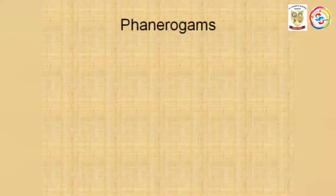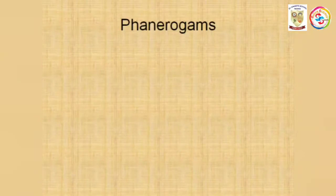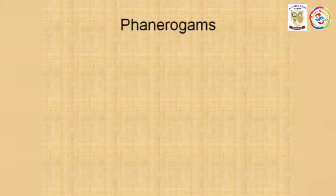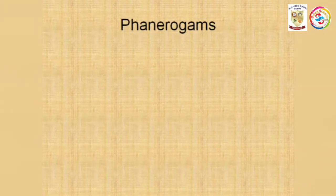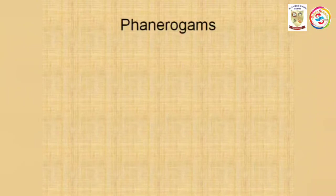Good morning everyone. In this lecture, we will study the classification of plants, specifically phanerogams — flowering plants. The criteria for classification of plants include organs like roots, stem, leaves, and parts of conducting tissues. Basically, plants are classified into cryptogams (non-flowering plants) and phanerogams (flowering plants). Cryptogams are further divided into three divisions: Thallophyta, Bryophyta, and Pteridophyta.